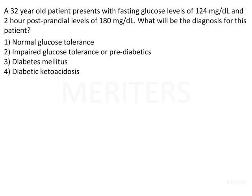A 32-year-old patient presents with fasting glucose levels of 124 mg per deciliter and 2-hour postprandial levels of 180 mg per deciliter. What will be the diagnosis for the patient?